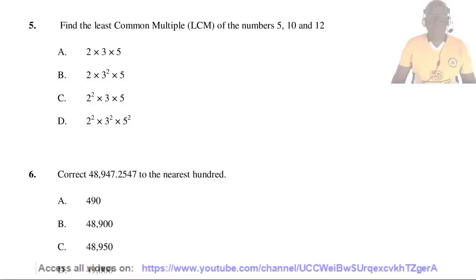Question 5. Find the least common multiple LCM of the numbers 5, 10, and 12. We shall find the product of the prime factors. For 5, it is 5. For 10, it is 2 times 5. For 12, it equals 4 times 3, and 4 is 2 squared times 3. For the LCM, we consider the individual prime factors. The highest power of 2 is 2 squared, for 3 is 3, and for 5 is 5. So the answer is C: 2² × 3 × 5.